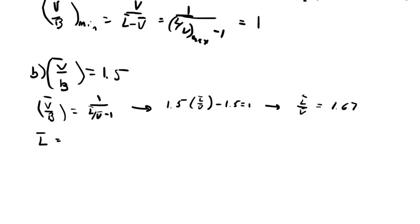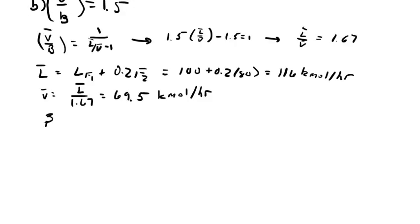Finding your L bar flow rate will be equal to the liquid stream from feed 1 coming down plus 20 percent of the feed 2 stream coming down. Your V bar ratio can be found just from the L over V ratio you found before. We can then find the bottoms flow rate as just L bar minus V bar.